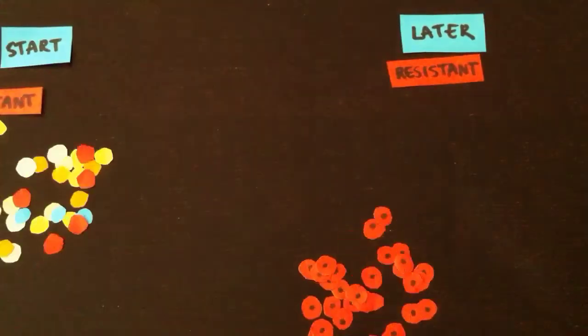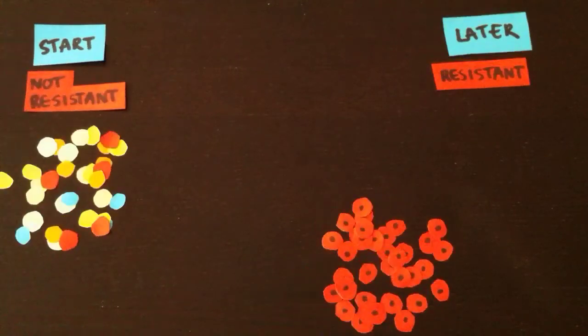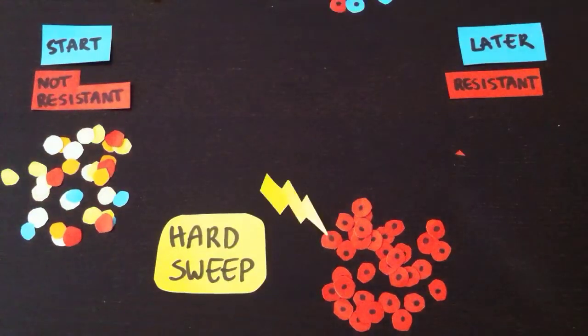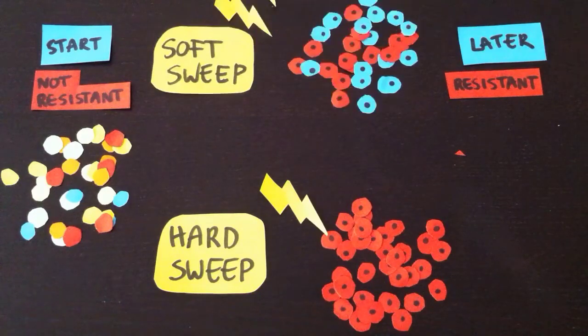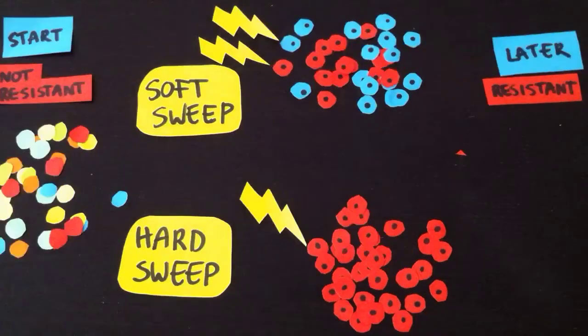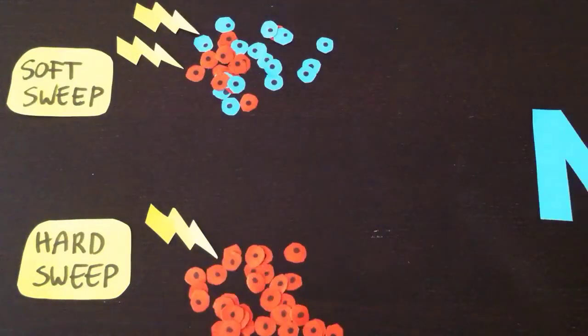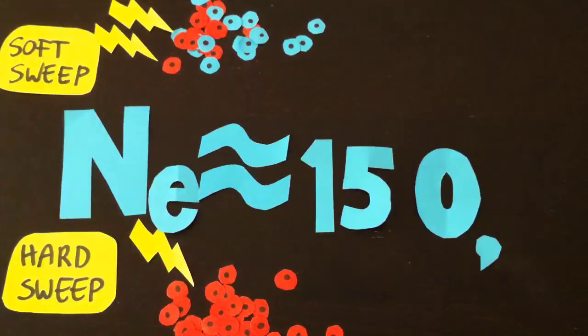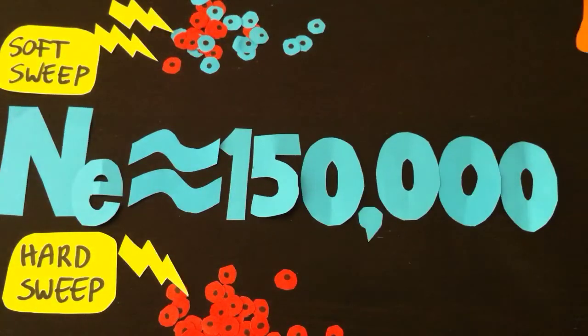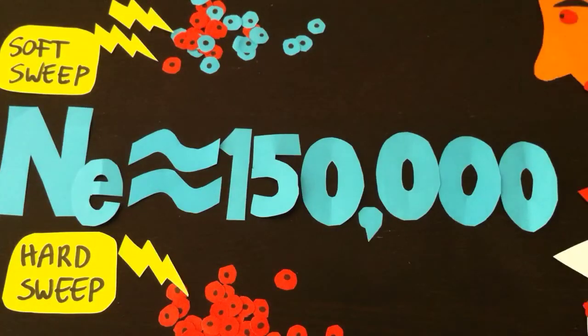Our fourth observation was that resistance mutations sometimes occurred through hard sweeps and sometimes through soft sweeps. In a soft sweep, the resistance mutation occurs on two or more genetic backgrounds. Using the frequency of soft and hard sweeps, we estimated that the effective size of the viral populations is around 150,000.